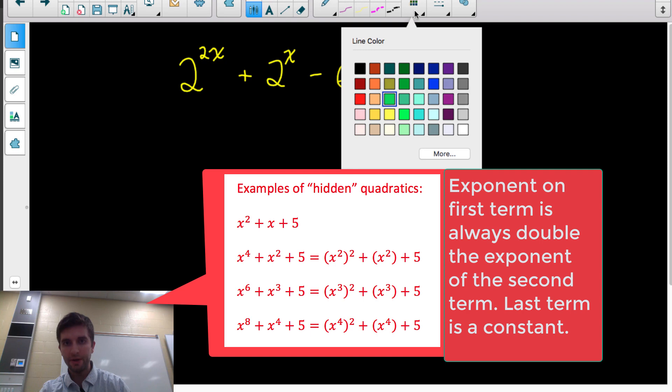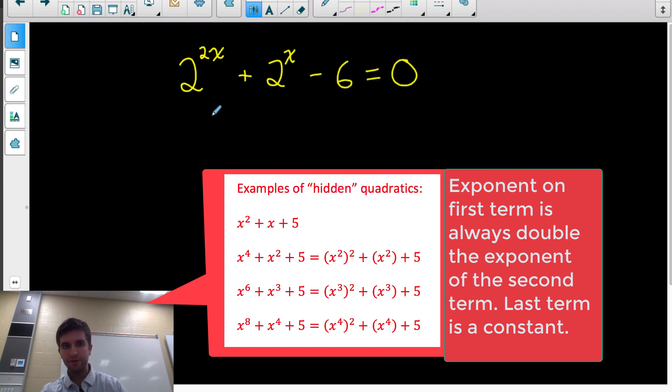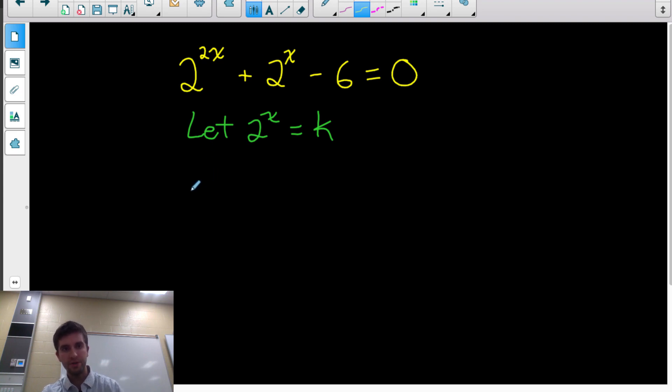And what I mean by that, let me show you a let statement. So let's say I said let 2 to the x equal k. Well, if I did that, if I replaced all the 2 to the x's with a k, so this 2 to the 2x would become k squared, right? This 2 to the 2x maybe would help you if you thought of this.